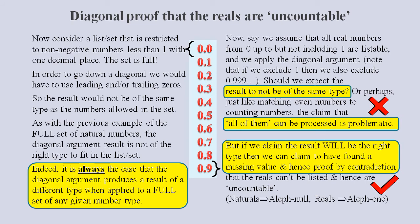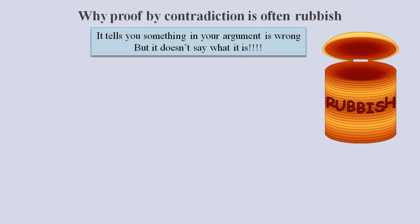For the disbeliever, this highlights the massive shortcomings of proof by contradiction. The biggest problem with proof by contradiction is that it tells you that something in your argument is wrong, but it doesn't say what it is.